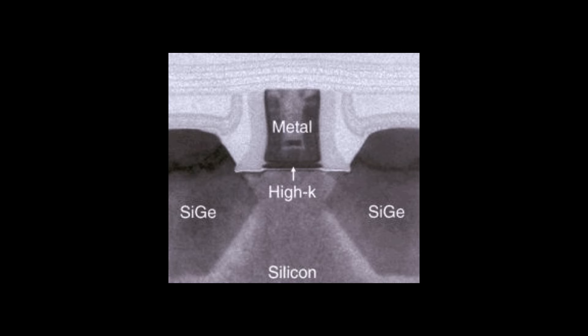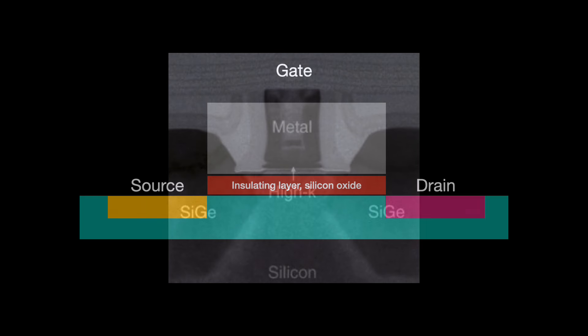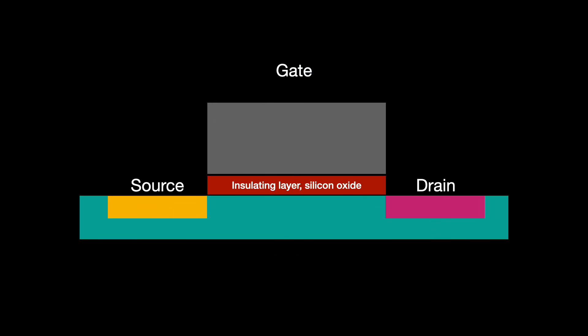In a planar transistor, the gate keeps electrons from leaking through from the source to the drain. In 2007, Intel replaced the traditional silicon dioxide with hafnium oxide — the high-K metal gate — to better prevent electron leakage across said gate.